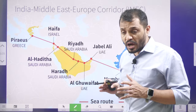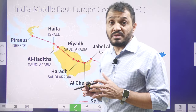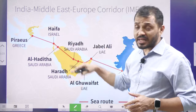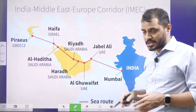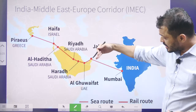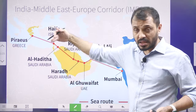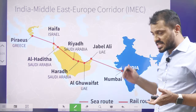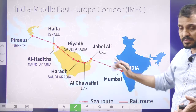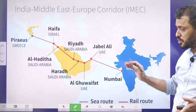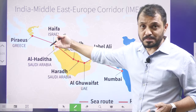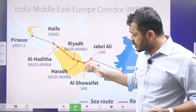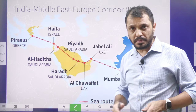This corridor is going to offer a comprehensive wide range of solutions. It consists of two parts — the eastern part and the northern part. The eastern part connects India with the Middle East and UAE. The northern part consists of UAE's connection to Europe.